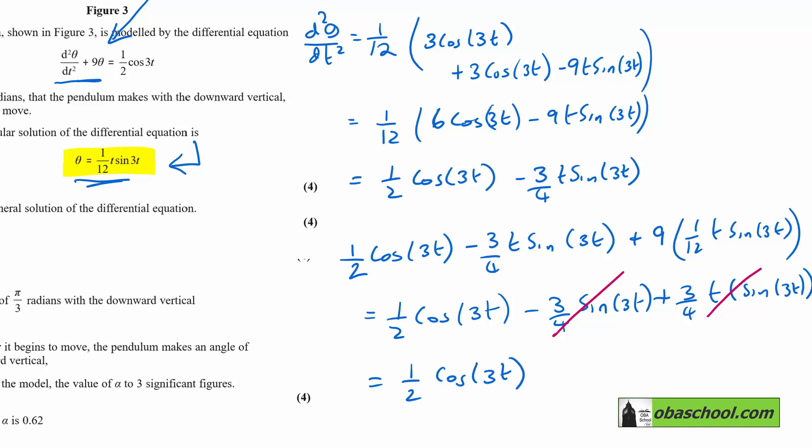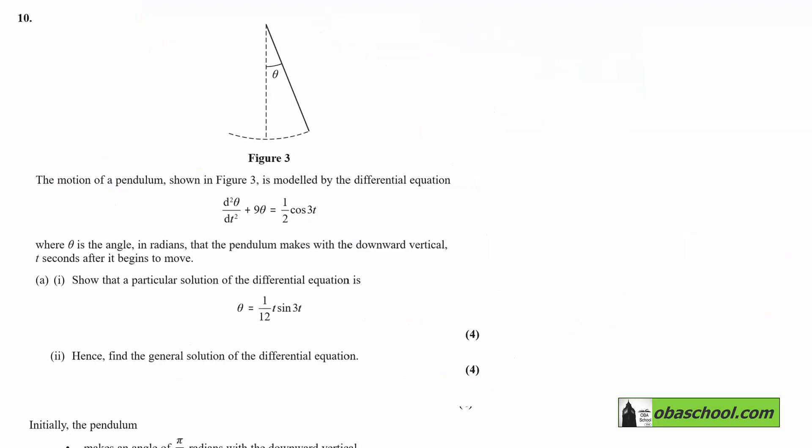The t·sin(3t) terms cancel out and we are left with ½cos(3t), which is the right-hand side of the equation. So the particular solution works.